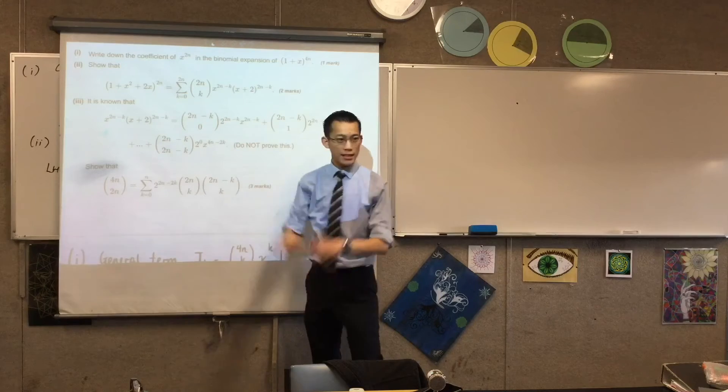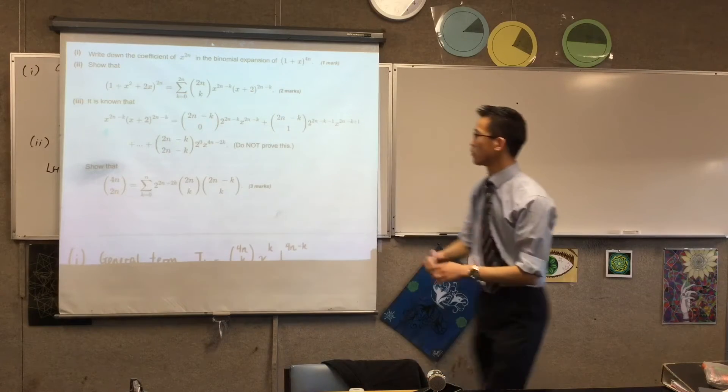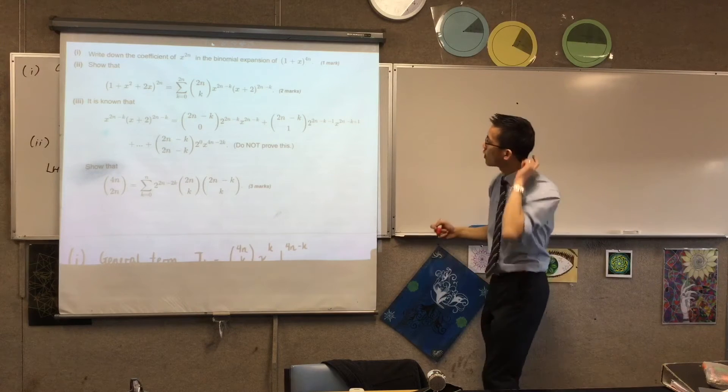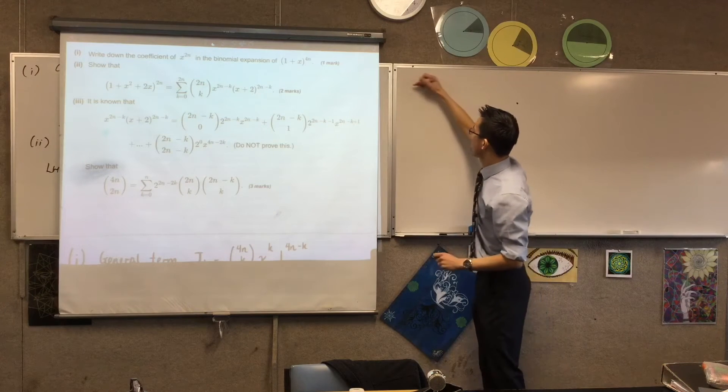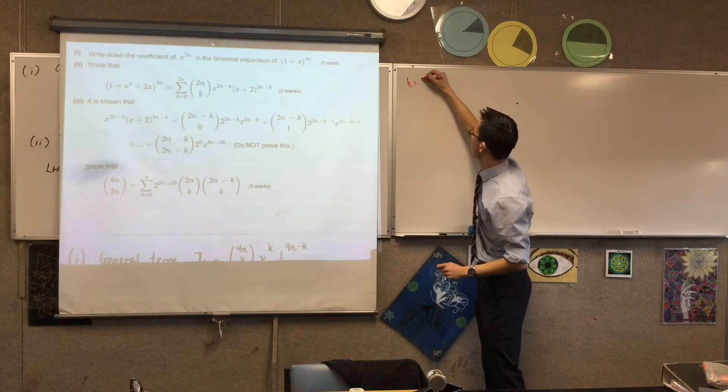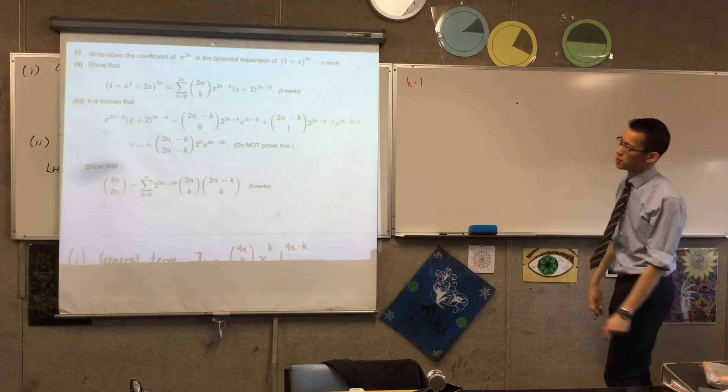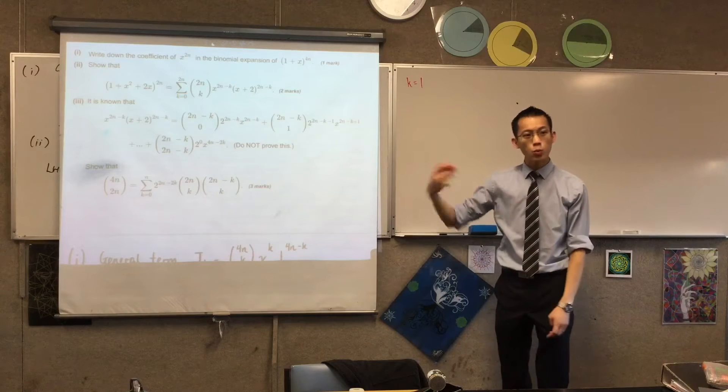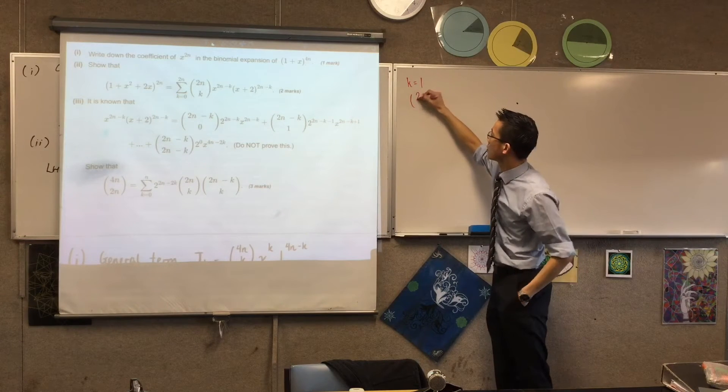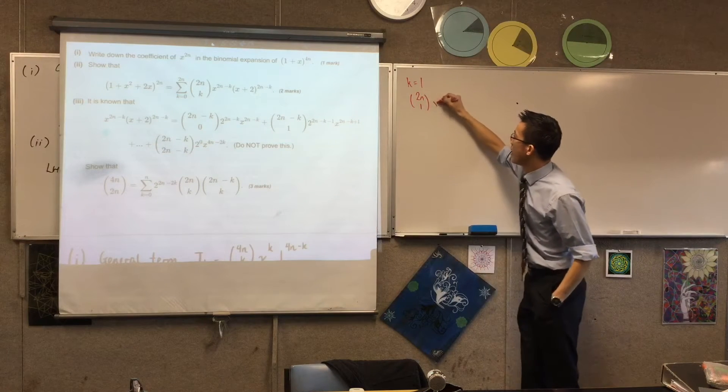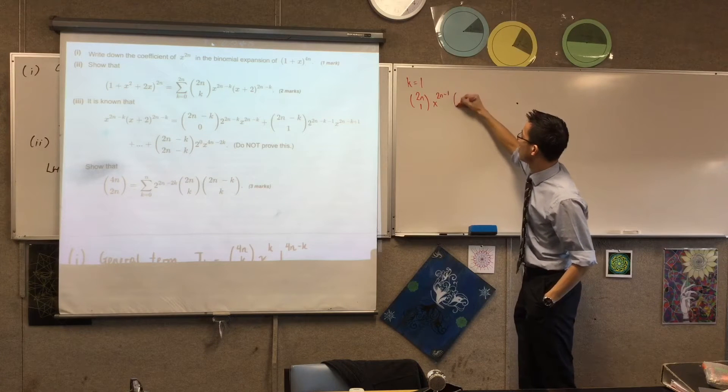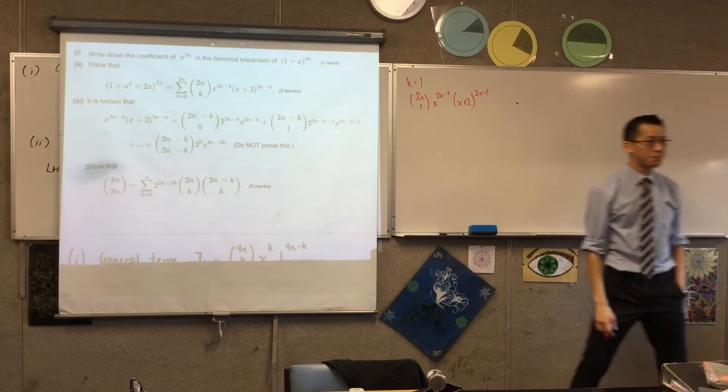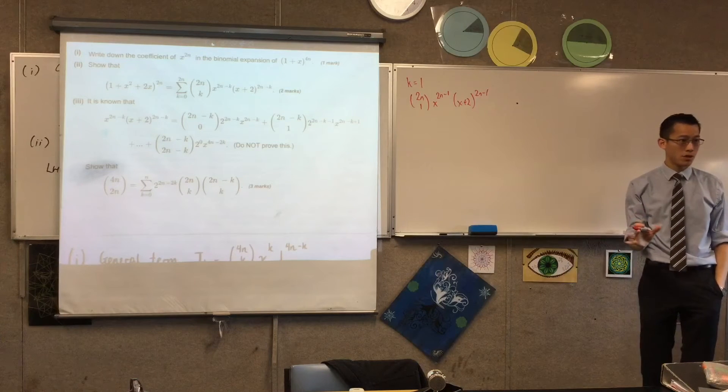Let's think about one of those things you need to add up, just one of them. For instance, let's pick a value like k equals one. I'm choosing it because k equals zero is too simple. The k equals one term looks like this: 2nc1, x to the 2n minus 1, x plus 2 to the power of 2n minus 1. Have I done the substitution right?